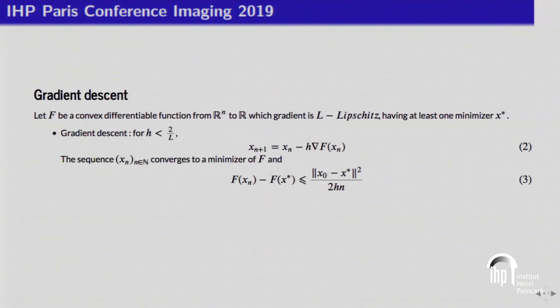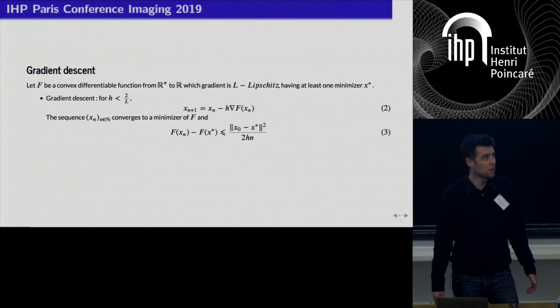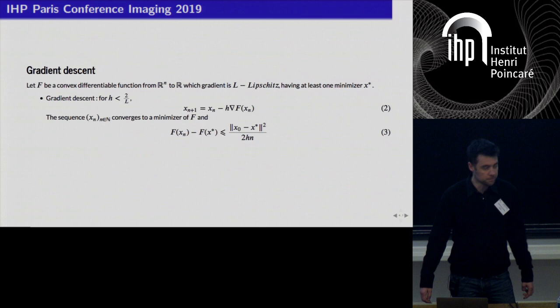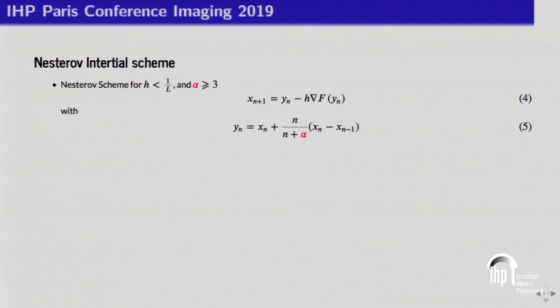A classical way to build such a sequence is classical gradient descent with a constant step. If the step is small enough, you can ensure that the sequence x_n converges to a minimizer x-star, and you have a bound on the decay of F(x_n) minus F(x-star), which is big-O of 1 over n, depending also on the L1/L2 norm of x_0 minus x-star and on the step size h.